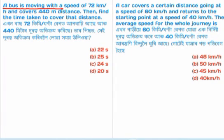A bus is moving with a speed of 72 kilometers per hour and covers 440 meters distance. Find the time taken to cover that distance.